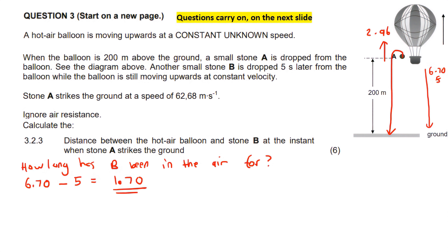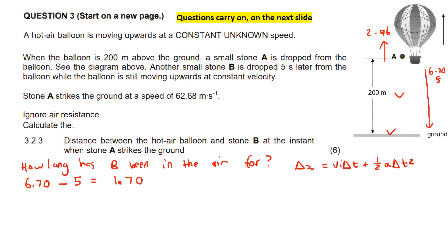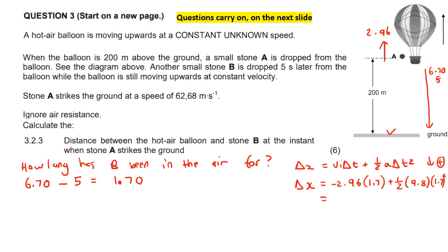We work out how far stone B has moved downwards in 1.70 seconds using Δx = viΔt + ½aΔt². Choosing downwards as positive, the initial velocity of stone B is negative 2.96 m/s (same as the balloon), time is 1.7 s, and gravity is 9.8 m/s². Calculating gives a displacement of 9.129 meters downward. But at the same time stone B was going down, the hot air balloon was going up.